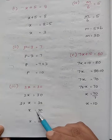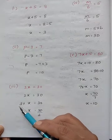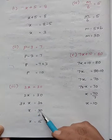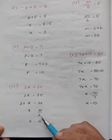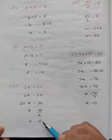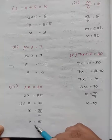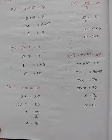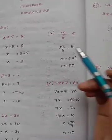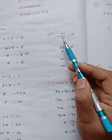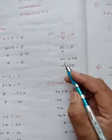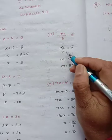2x equals 30. 2x means 2 into x equals 30. Since 2 is in the terms of multiplication, when taken to the other side it becomes division. So 30 divided by 2 is 15. The value of x is 15.